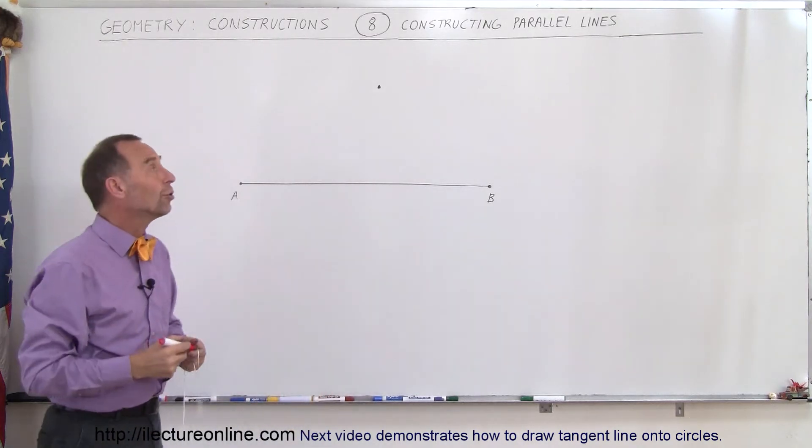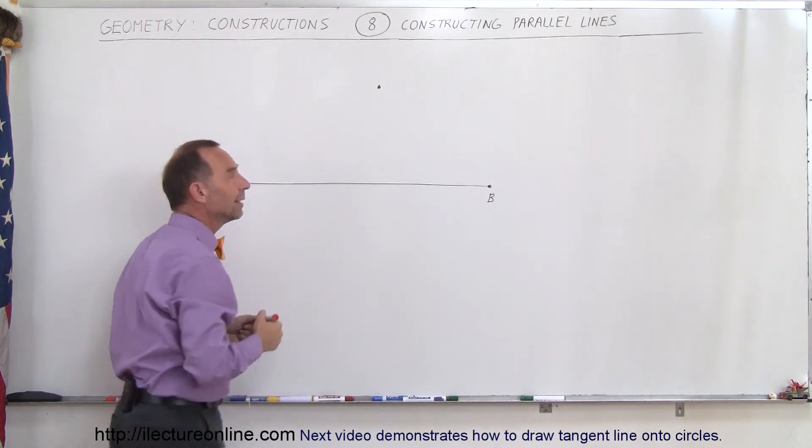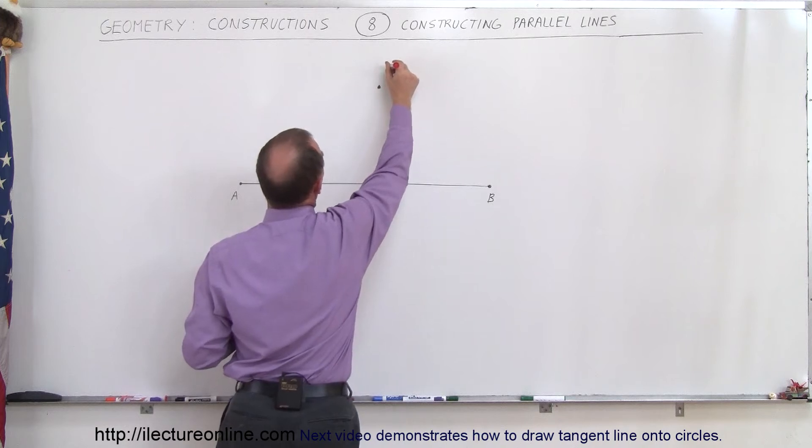So the first thing you want to do is draw a line from that point through the line segment from A to B. It doesn't have to be perpendicular, so any old line will do. So let's draw a line like this.